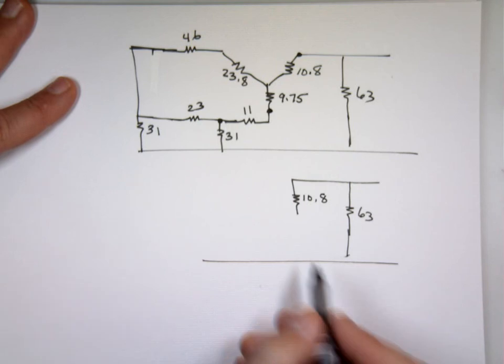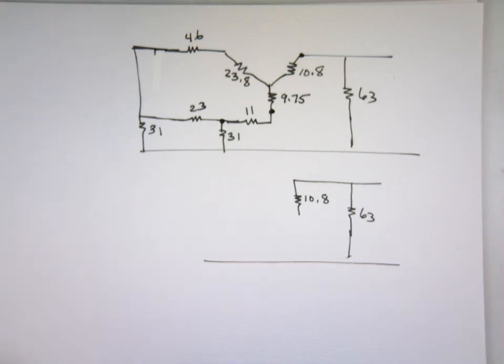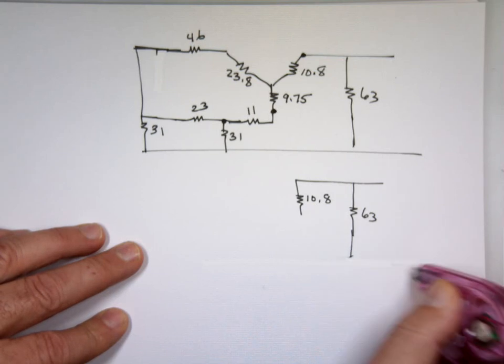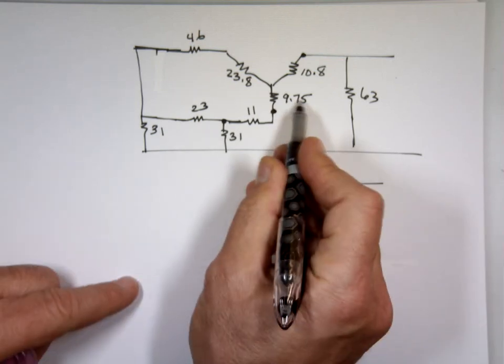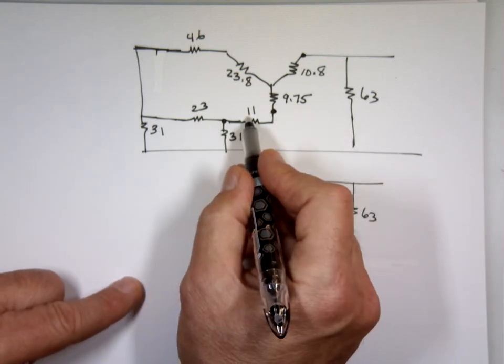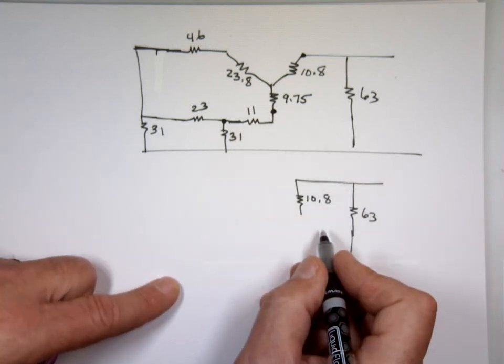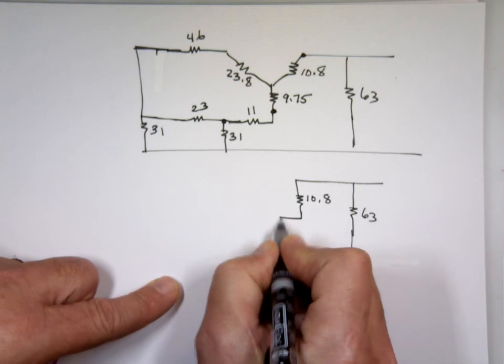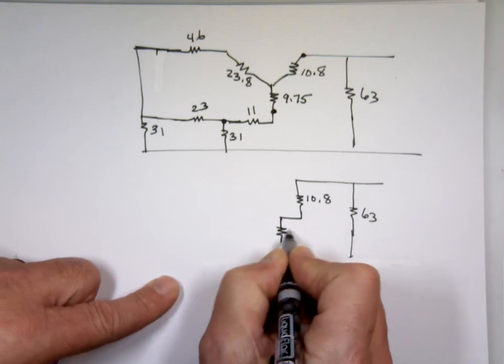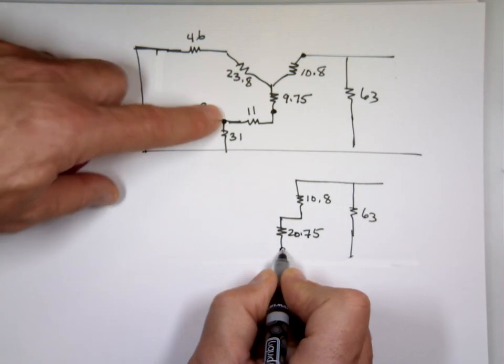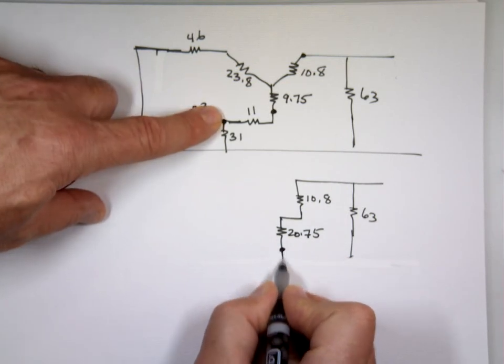I'm going to take this and that. Combine them together. I'm not sure if I need more space or not. I'll leave it. What's 9.75 and 11? That's 20.75, right? I'm right here. That's this point here.